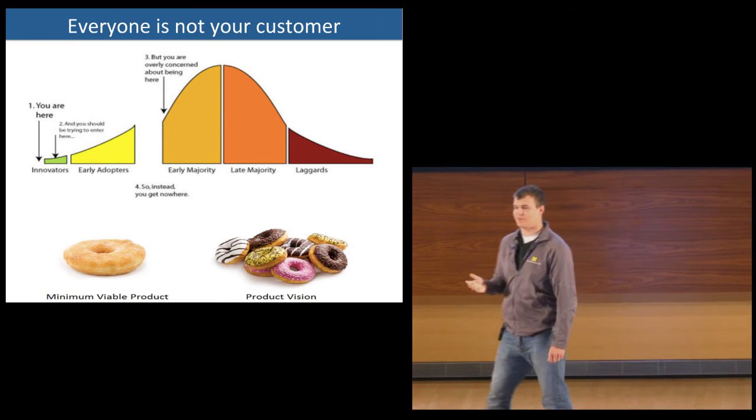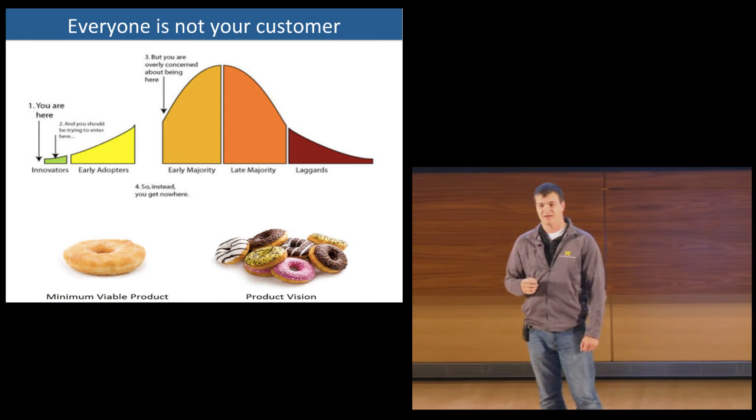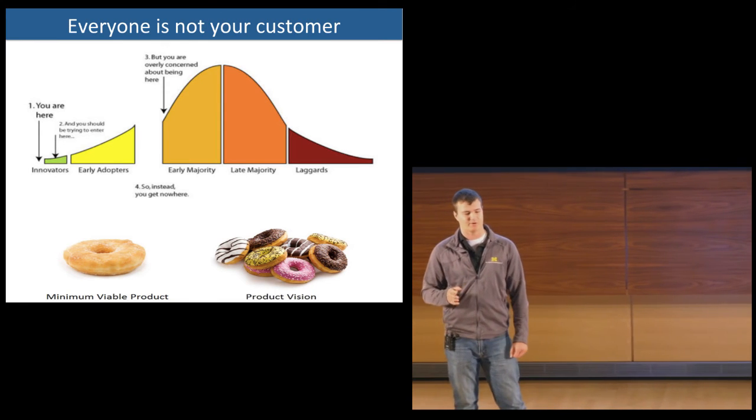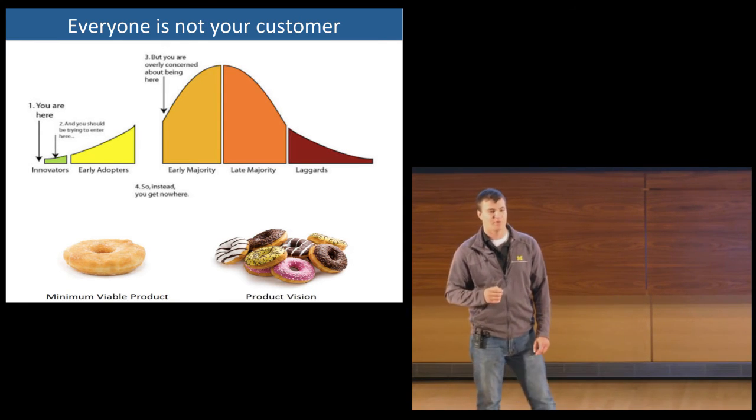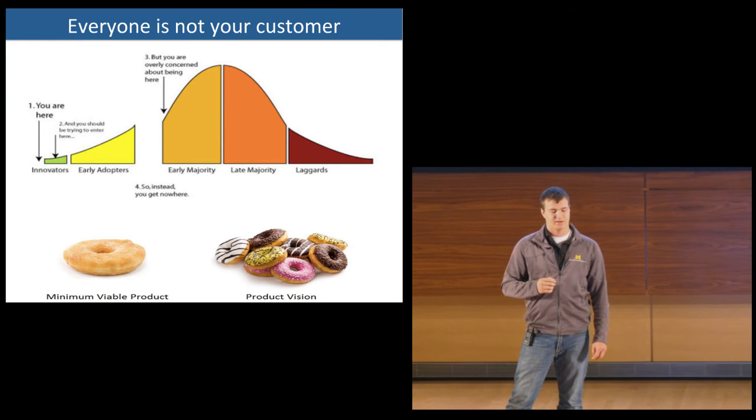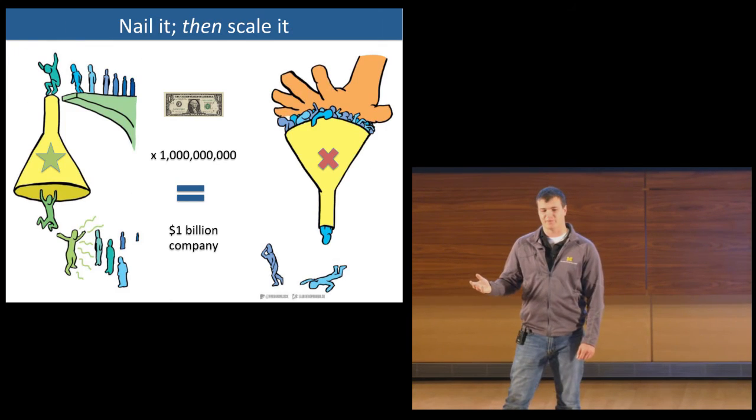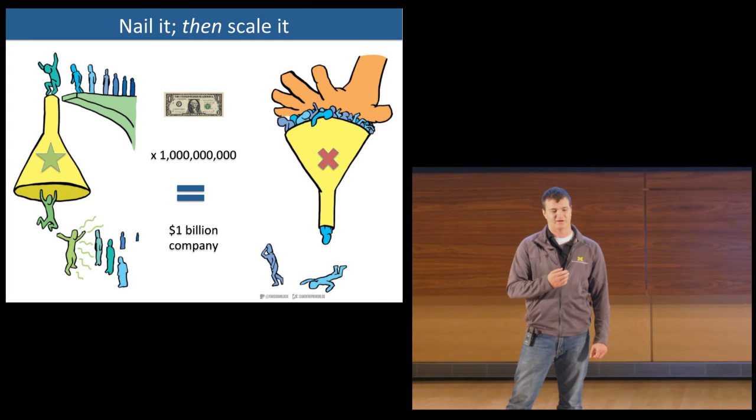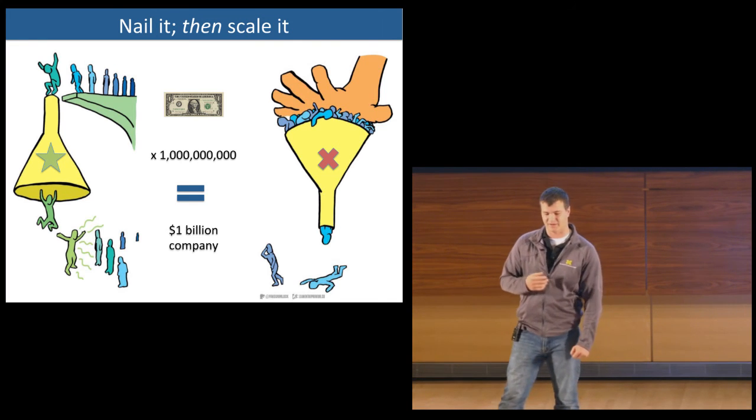Most people are turned off by MVPs because they're not perfect. That's okay because at this early of a stage, everyone is not your customer anyways. We want to start with early adopters that can begin with our minimum viable product and piece together our roadmap to our product vision.